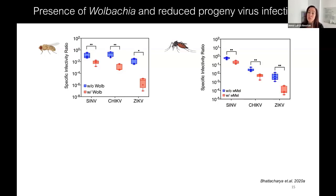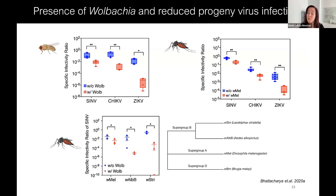We also see the same reduction in specific infectivity for Wolbachia-infected mosquitoes across those same three viruses. Do multiple Wolbachia strains do this? Yes. We have mosquito cells infected with three different Wolbachia strains — W-Mel from melanogaster, W-Alb from Aedes albopictus, and W-Stri from a leafhopper — and in each case we see this drop in specific infectivity.